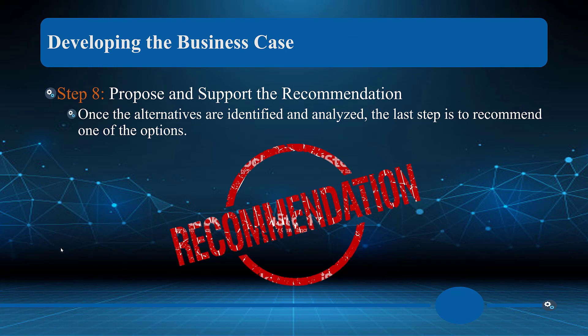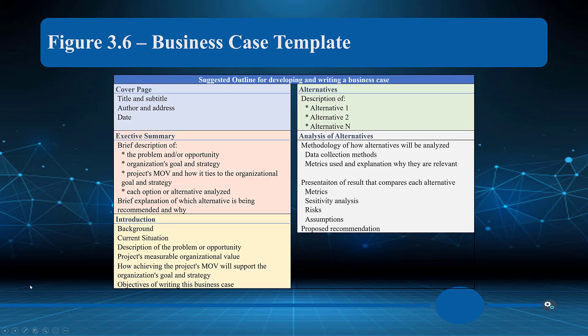When proposing and supporting a recommendation, I always include at least two to three alternatives, because I can end up being biased toward the project I've spent time on. It's not my decision — it's executive management, stakeholders, and everyone affected by the project. As the IT manager or project manager, I need to make sure it matches the organization's needs. Once alternatives are identified and analyzed, the last step is to recommend one of the options.